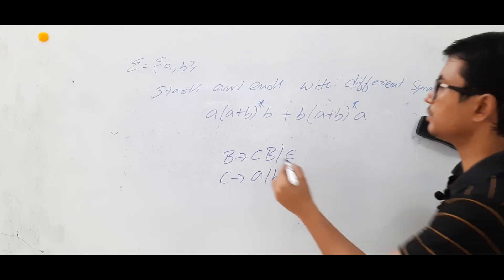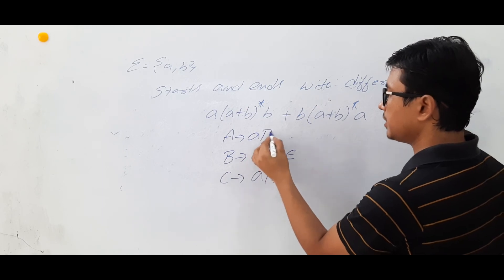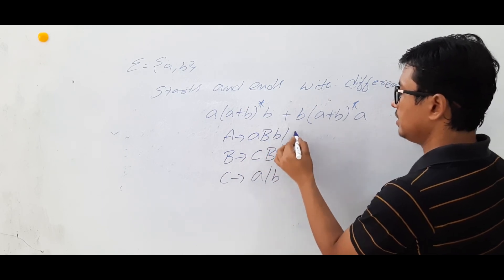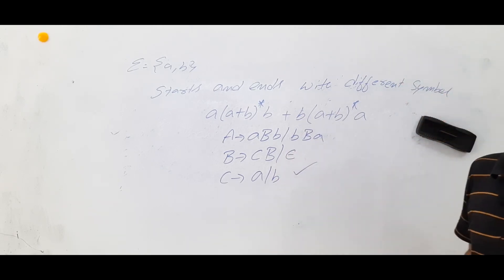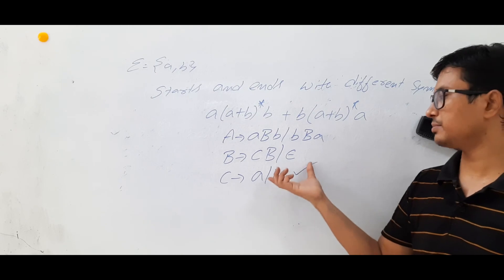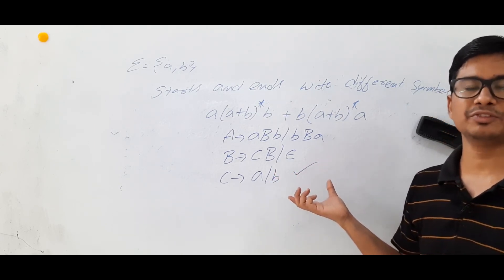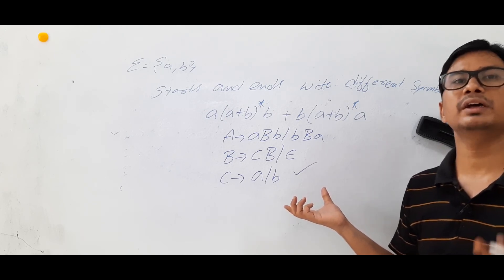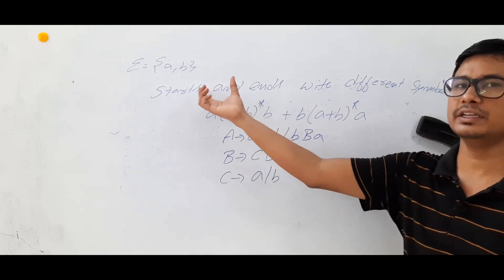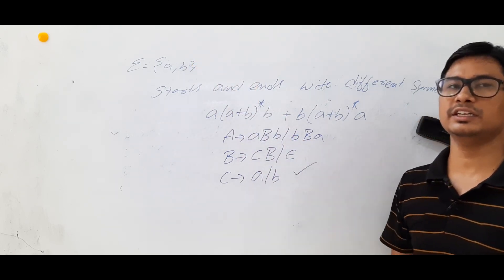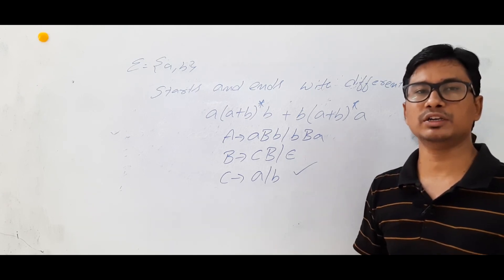Now the remaining part: I need to generate strings of the form aCb or bCa. So A → aCb | bCa. This is a regular grammar. We have discussed various types of grammars: regular grammar, context-free grammar, context-sensitive grammar, and unrestricted grammar. This example belongs to the category of regular grammar because it is a regular language.